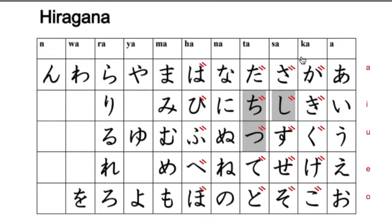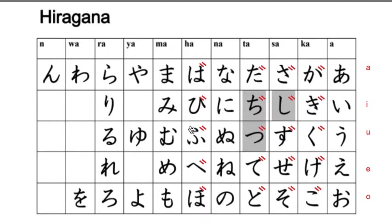The columns always start with the same sound. This is the K column: ka, ki, ku, ke, ko. The S column: sa, si, su, se, so. The T column: ta, chi, tu, te, to. And the H column: ha, hi, fu, he, ho.